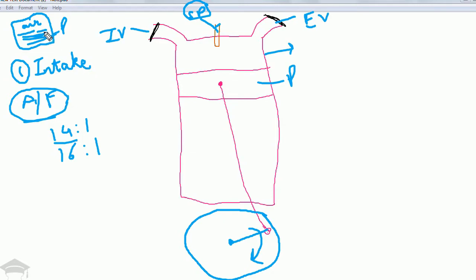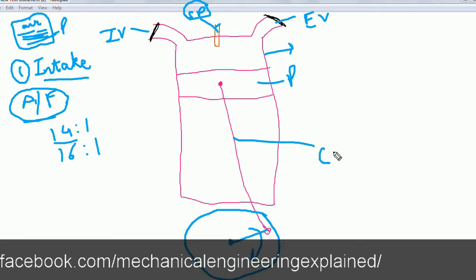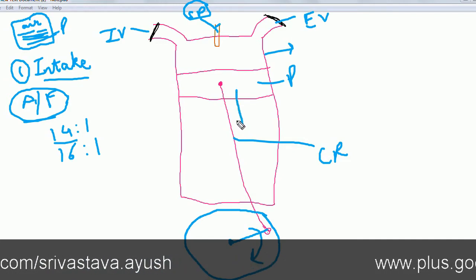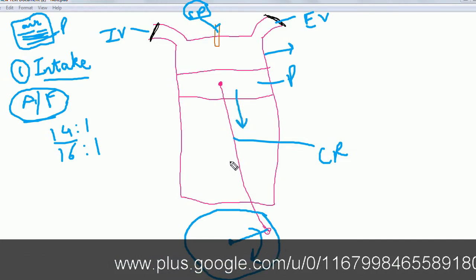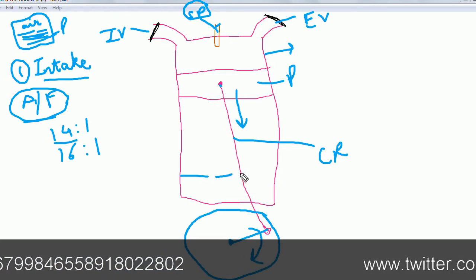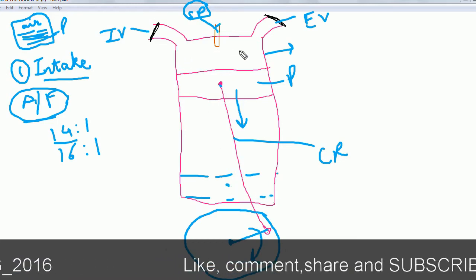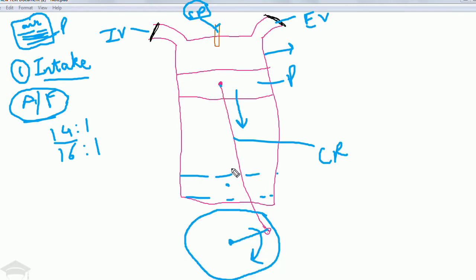This air-fuel mixture is made in the carburetor. In the intake stroke, the piston is connected to the crank, and when the crank rotates clockwise the piston moves downwards to the bottom dead center. This creates a large vacuum inside the cylinder, so the intake valve opens and the air-fuel mixture from the carburetor travels into the cylinder.